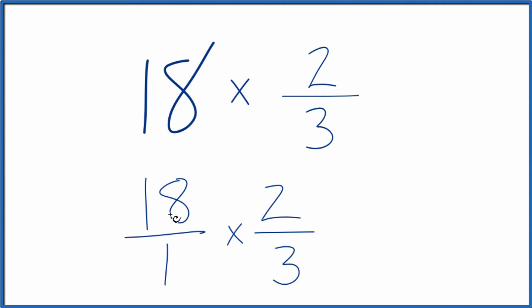When we multiply fractions, we multiply the numerators, then the denominators. So 18 times 2, that's 36. 1 times 3, that's 3.